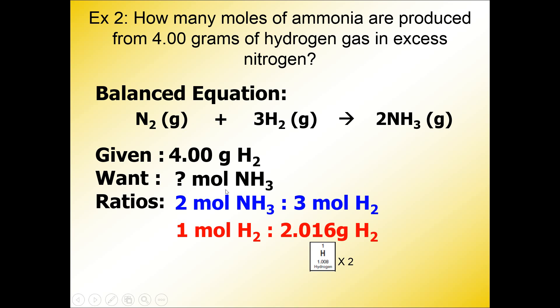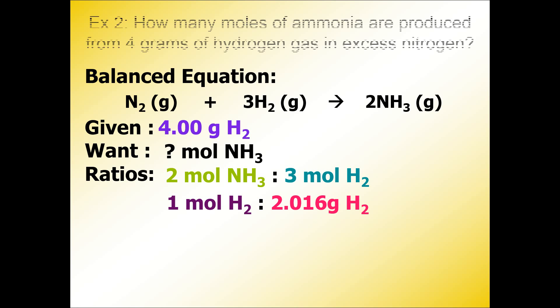I do not see the unit of grams next to NH3, so we don't need a molar mass for NH3. I also do not see the terms atoms, molecules, or formula units, so we don't need Avogadro's number either. I'm going to continue this problem on the next slide